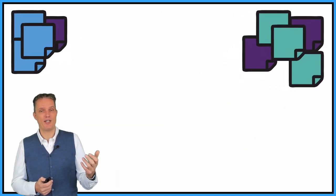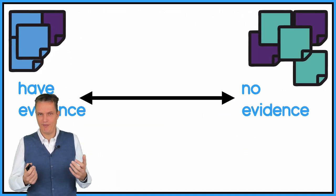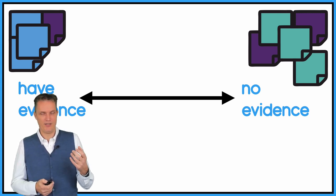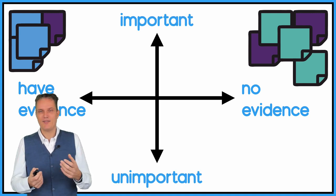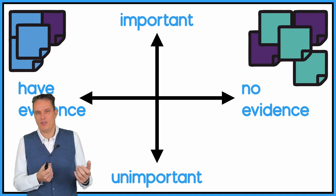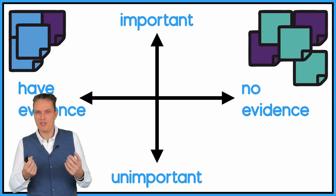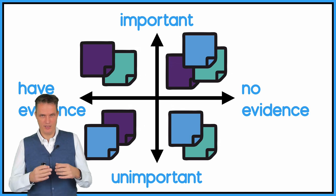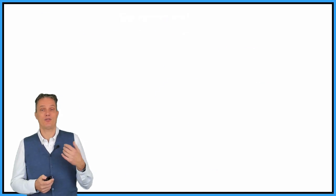The next step is to prioritize them. So you have to think about do we have evidence? Do we have data-driven evidence that this assumption is right or wrong? Or don't we have any evidence for it? And is it very important or not so important? How mission critical are these assumptions? So you plot these assumptions on these quadrants, on these axes. And then you go to the next step.